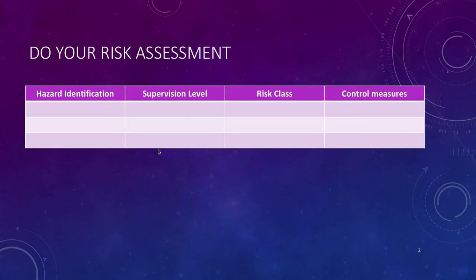As always, don't forget to do your hazard identification, then the supervision level that will be required might be general or close supervision. The risk assessment class high, low or medium, and then what control measures are you going to put in place to try and reduce the risk of the hazard that you've identified.